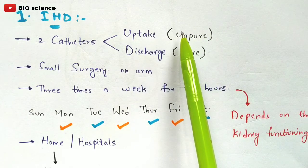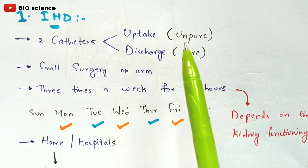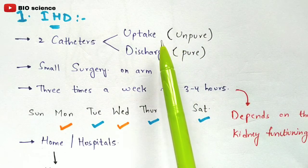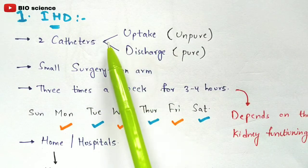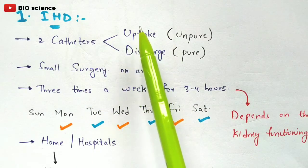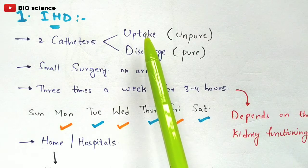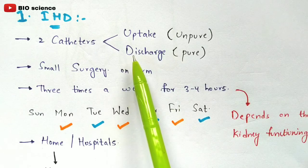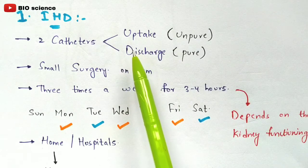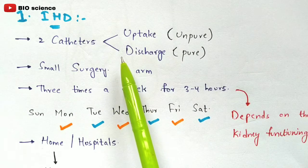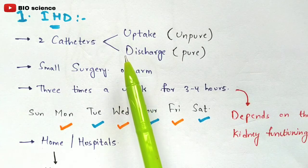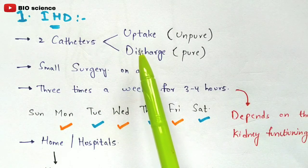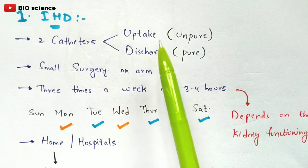The blood taken up is impure, because dialysis purifies the blood. Impure blood is taken from the arteries through one catheter. After purification, the pure blood is transferred back into the same patient through another catheter via the veins.